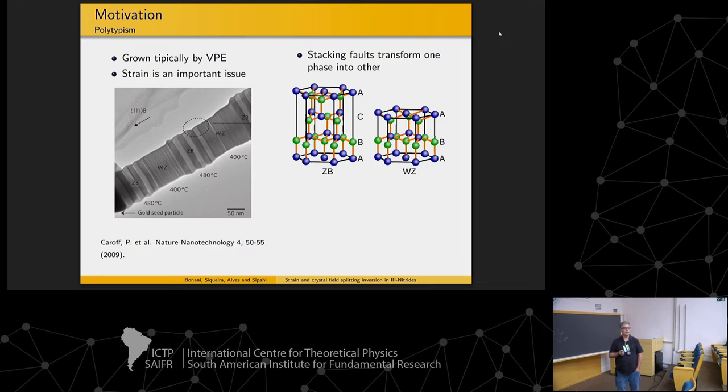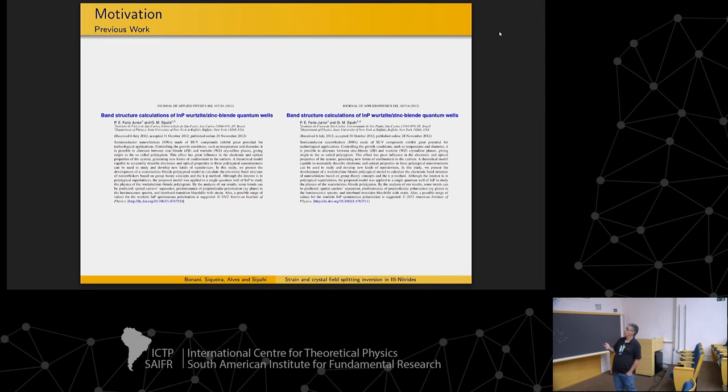And sometimes when you need a bulk system that grows in wurtzite, actually in nitrides the wurtzite is the most stable phase and zinc blend is the less stable. But this kind of growing can be used in other materials, gallium arsenide for instance, having a wurtzite gallium arsenide grow on a wurtzite structure, a bulk one.